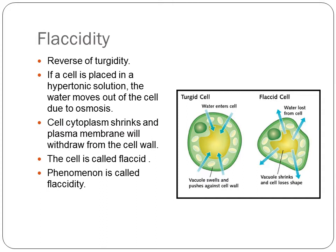The cell loses its shape — just the opposite of what happens in a turgid cell. In a flaccid cell, the cell is placed in a hypertonic solution, so water tries to move out due to osmosis. The cell cytoplasm shrinks and the plasma membrane withdraws from the cell wall, much further away from the cell wall. The vacuole is shrinking and the cell is losing its shape. This phenomenon is called flaccidity.